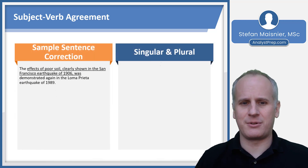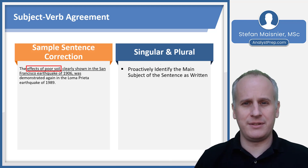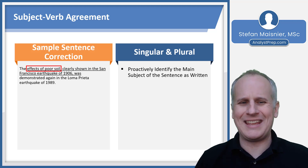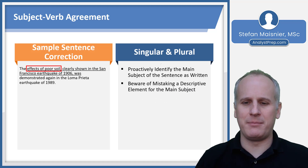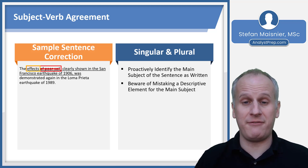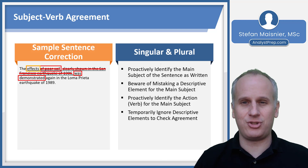Let's look at a sample sentence correction and think about singular and plural. Read the sentence: 'The effects of poor soil clearly shown in the San Francisco earthquake of 1906 was demonstrated again in the Loma Prieta earthquake of 1989.' The effects of poor soil is our main subject. We need to avoid mistaking 'of poor soil' — which just describes the effects — for the main subject. So 'the effects' is the main subject. We then find the verb and can temporarily ignore descriptive elements to check agreement. We get: effects was demonstrated.